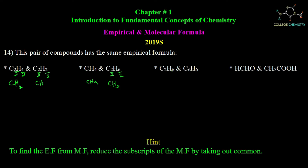Now let's check the next pair. C2H6 has a common factor of 2; dividing by 2 gives the empirical formula CH3. For the other compound, the common factor is 6; dividing by 6 gives the empirical formula CH. So those empirical formulas are different. Let's write out these elements — we have one carbon.